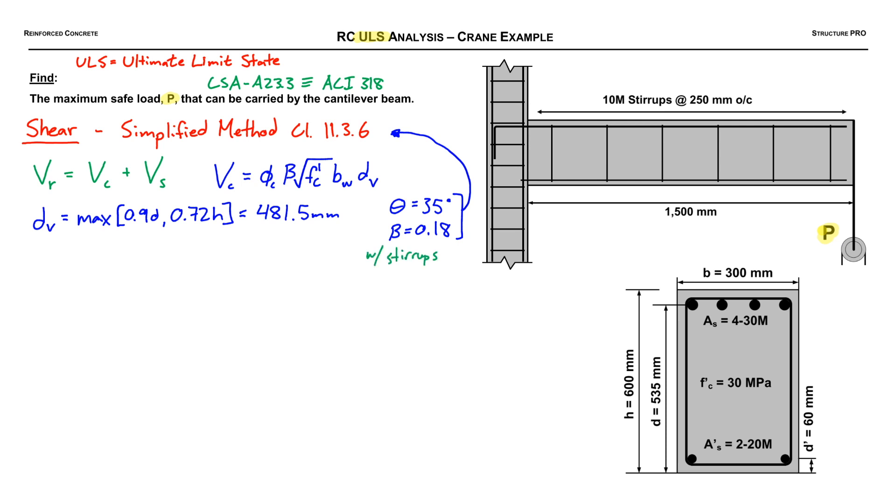This is the beta value for when there are stirrups. We see in our drawing we have 10M stirrups at 250 millimeters on center. We'll just plug everything into the VC equation. The shear is resisted by the web of the concrete, so we use BW. In our case, we don't have a T-beam, so that's just B. We find that our VC contribution gives us 92.6 kilonewtons of shear resistance.